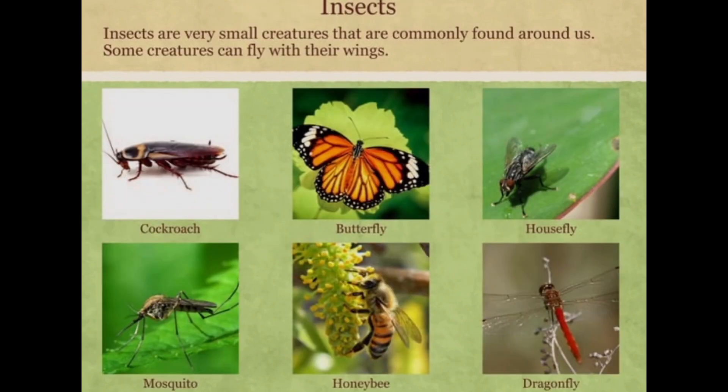Insects are very small creatures that are commonly found around us. Some creatures can fly with their wings. Examples include cockroach, butterfly, housefly, mosquito, honeybee and dragonfly.